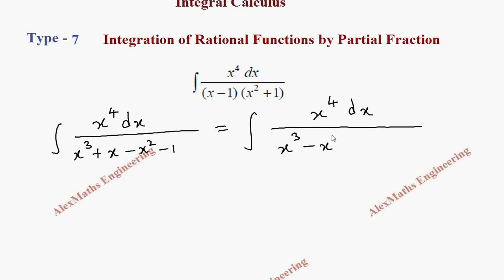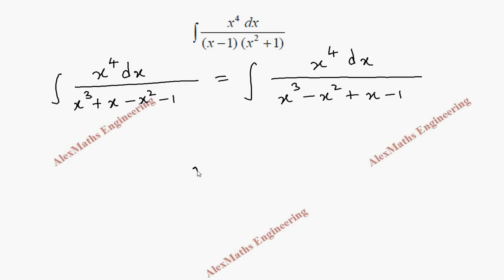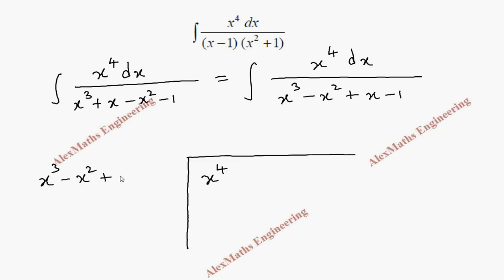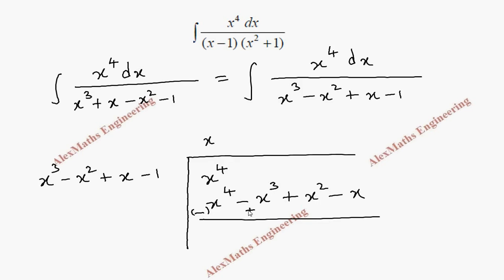Now for long division we are dividing x to the power 4 by the denominator x cubed minus x squared plus x minus 1. If I multiply with x we get the first term x to the power 4, then minus x cubed plus x squared minus x. We have to change the sign for subtracting — we change the sign of all the second term. We can cancel x to the power 4 and minus x to the power 4, and the remaining term is x cubed minus x squared plus x.